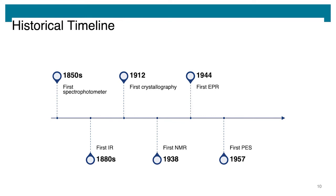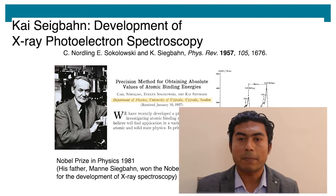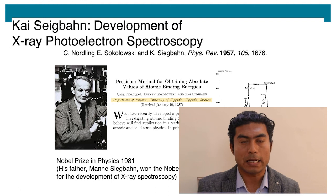In 1960s Kai Siegbahn working at the Uppsala University of Sweden developed high resolution analyzers and identified the shift of binding energies of chemical species. He pioneered the extensive use of photoelectron spectroscopy as a characterization technique. That's why XPS is also called ESCA, the electron spectroscopy for chemical analysis.